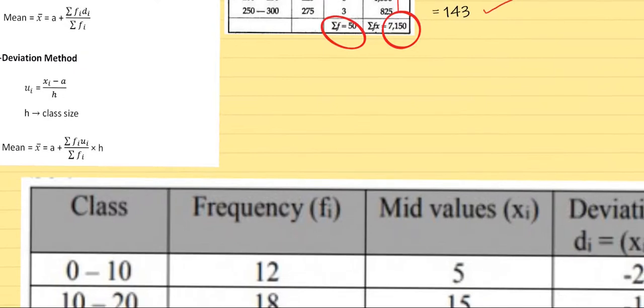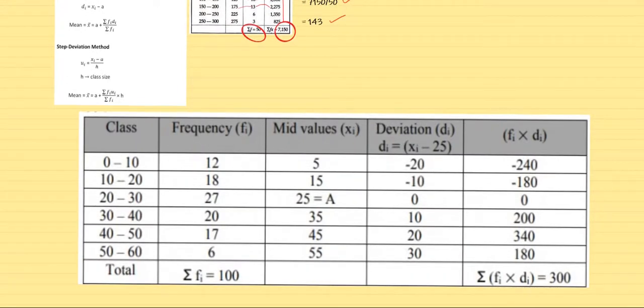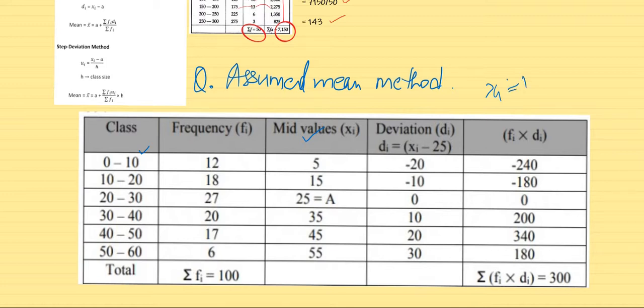Now we will look at one more sum. I have taken a random example, not from your textbook. We will be solving this question using assumed mean method. Coming back to this, we have 0 to 10, 10 to 20, these are all our class intervals. Frequency is already given in the question. This is my part of work. When I need to find xi, what should I do? I should do 10 plus 0 by 2, and that comes to be 5. Similarly 15, 25, 35, 45 and 55.